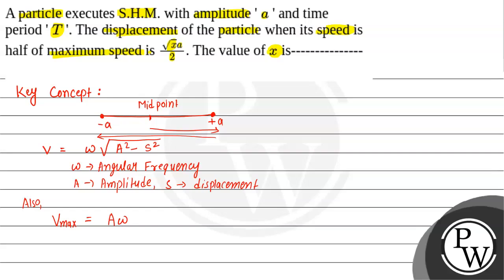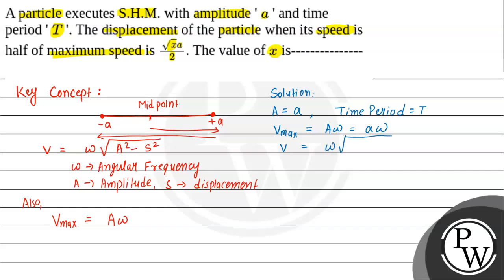Using these two formulas, we will solve this question. In the solution: amplitude given is a and time period given is t. First, we find maximum velocity: v_max = a times omega. Similarly, velocity at any time v = omega times square root of (a squared minus s squared).